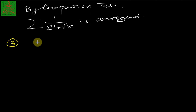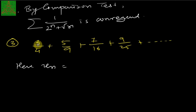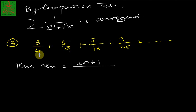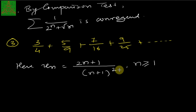The third example: test the convergence of 3/4 + 5/9 + 7/16 + 9/25 + ... In the numerator we have odd numbers 3, 5, 7, 9, which is 2n+1. In the denominator we have 4, 9, 16, 25, which is (n+1)². So u_n = (2n+1)/(n+1)² for n ≥ 1.